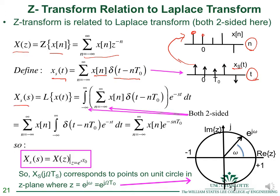We take the Laplace transform of x_s(t) by plugging into the definition and replacing x(t) with its summation form as a sum of delta functions. Each x(n) is not a function of t so we pull it out front, leaving the integral of a delayed delta function. By the delay property, the Laplace transform of a delayed delta function is e^(-snT_0).